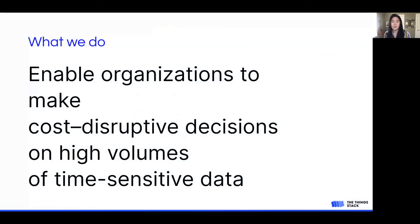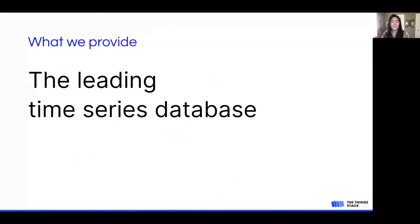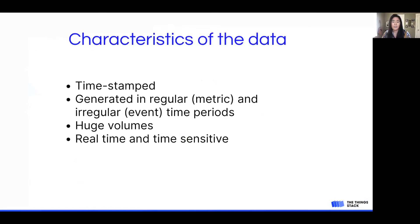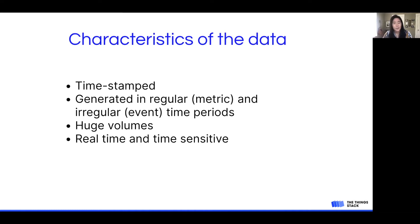A little bit about InfluxData and InfluxDB. What we do here — we enable organizations to make cost-disruptive decisions on a high volume of time-sensitive data. InfluxDB is the leading time-series database and we collect and store time-series data. Time-series data is time-stamped data generated in regular and irregular time periods. It can hold incredible large volumes of data, all of which can be viewed and analyzed in real time. If you're looking for a database or platform to store this type of data, InfluxDB Cloud is the perfect solution for you.